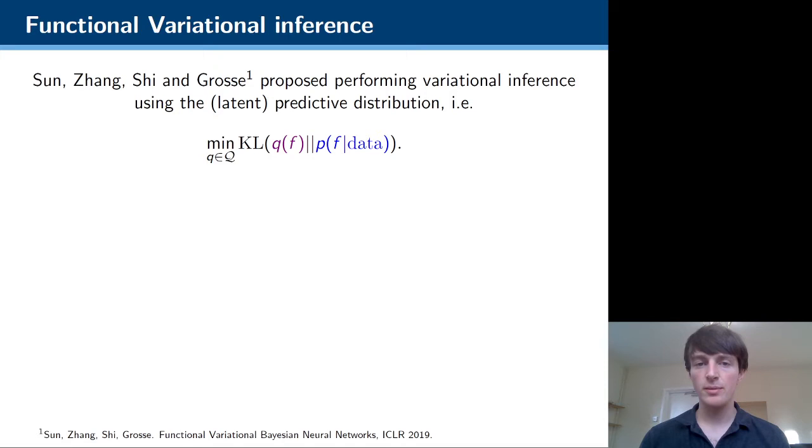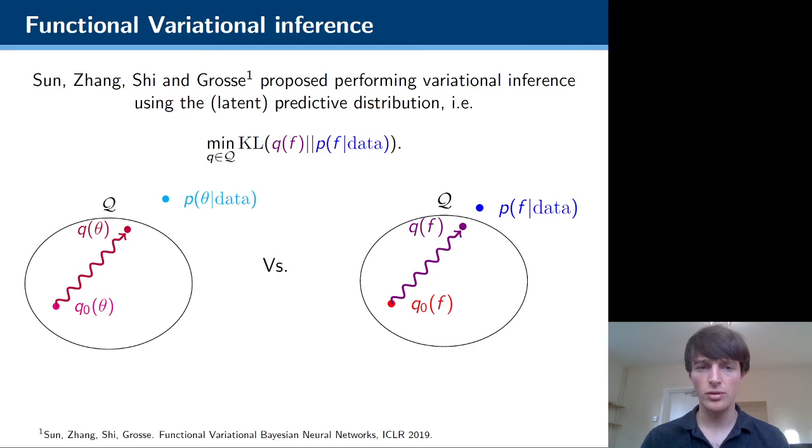We look at a methodology proposed a couple years ago in a paper by Sun, Jiang, Shi, and Gross, and the idea is to directly approximate the posterior distribution over some latent function with variational inference instead of first trying to approximate a distribution over parameters and then using that to get a posterior predictive distribution.